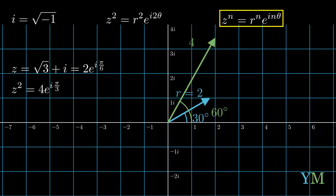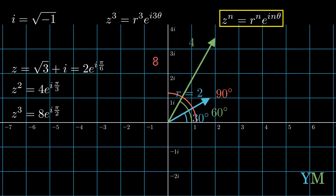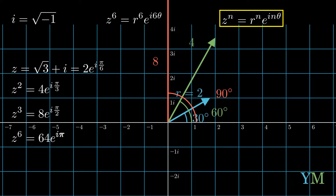Now let's move on to z to the power of 3. Just as easily, we get r cubed times e to the i 3 theta. In our case, we receive 8 times e to the i pi over 2. Its angle is 90 degrees with a distance of 8, so basically we receive the number 8i — that would be its algebraic presentation. We can also calculate z to the 6: we receive r to the 6, e to the i 6 theta, which is 64 times e to the i pi — a complex number with angle 180 degrees and distance 64, meaning we receive minus 64. Just a real number with no imaginary part.